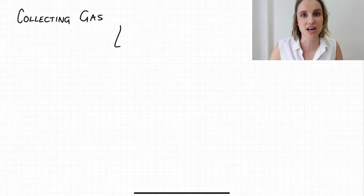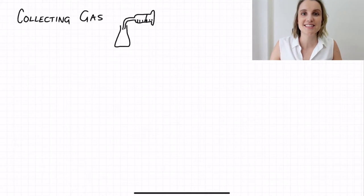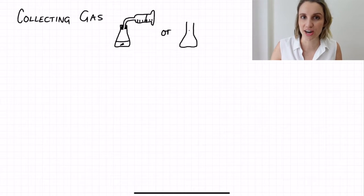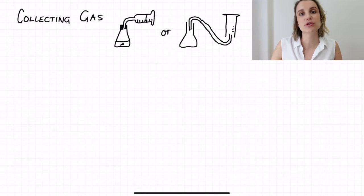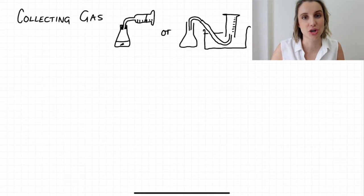One of the most common ways of measuring rate of reaction is to measure the volume of gas collected in a set period of time. To do this we can collect the gas using a gas syringe or through displacement of water as shown here.